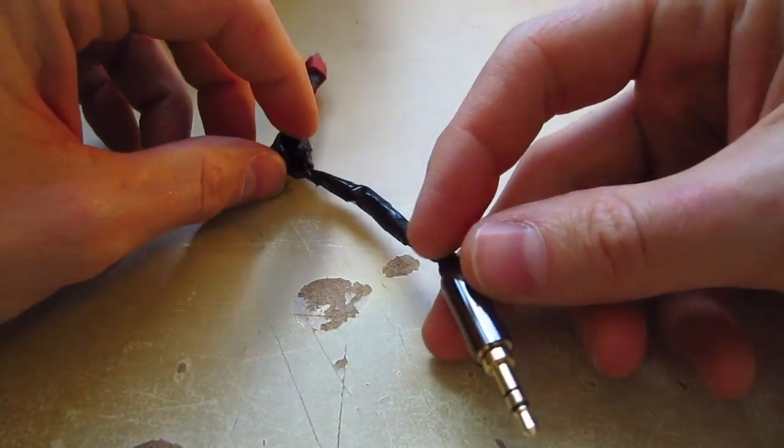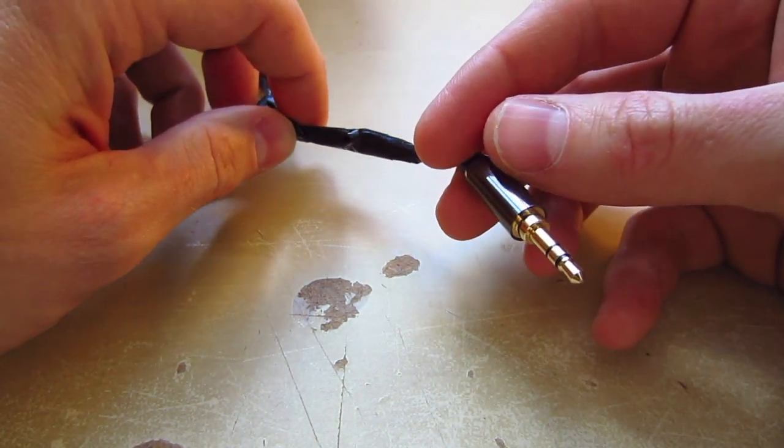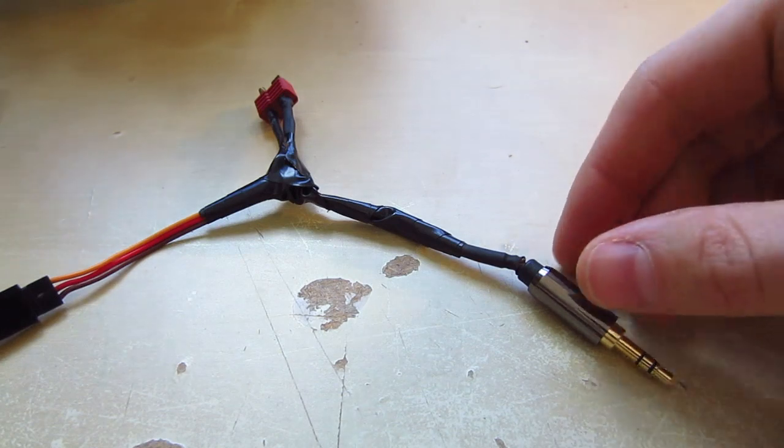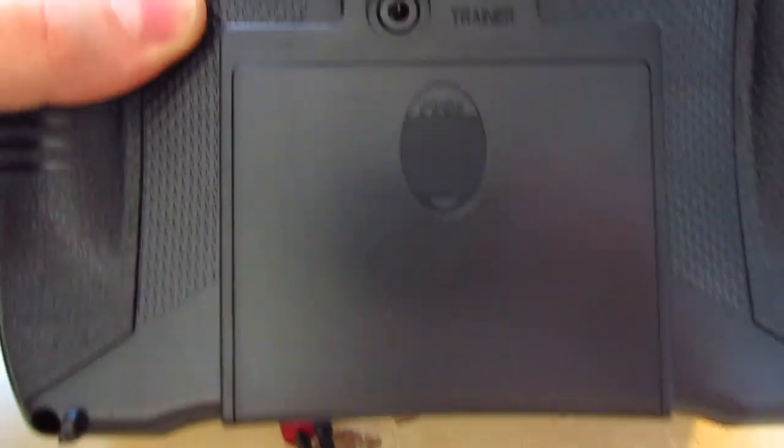This is a 3.5mm mono plug for stereo, and you need to use this because that connects here into the back into the trainer port of your DX7S.